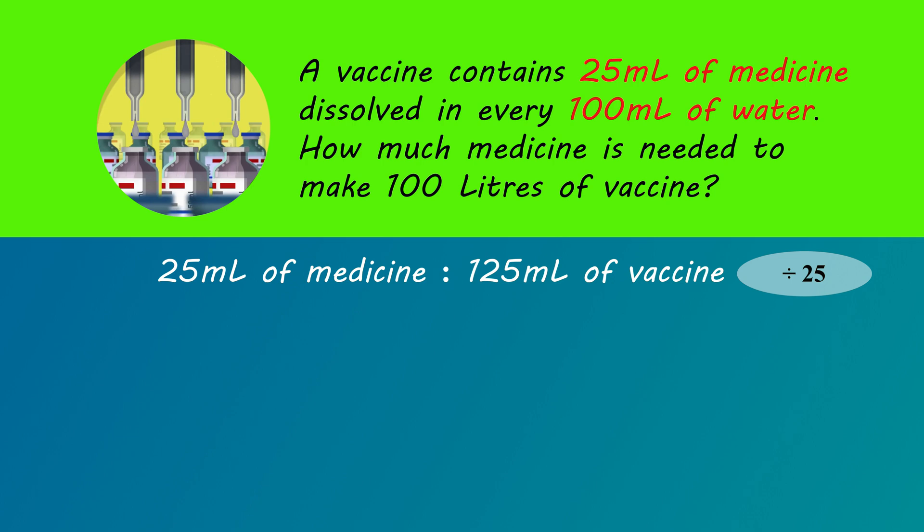These are divided by 25 to get the ratio of one is to five. What this means is that the actual medicine is one-fifth of the vaccine. So one-fifth of 100 liters of vaccine is 25 liters of actual medicine.